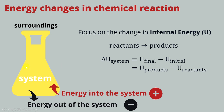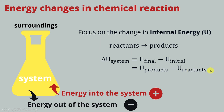If we focus our system on what we are interested in in chemistry — the chemical reaction — we are going to focus on the change of what is called internal energy, represented by the capital letter U. Our chemical reaction is the change of reactants to products. The change of internal energy of the system is the final state minus the initial state: products minus reactants.